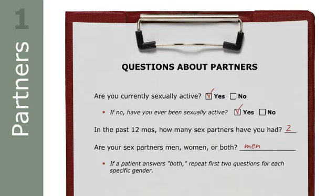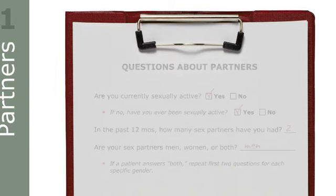In response to these questions, Brian responds that he has had sex with two men in the last year and only has sex with men. Based on his initial answers, you go on to ask selected questions from the 5 P's model. But first, you let him know that your questions are going to get a bit more explicit about the kind of sex he has.